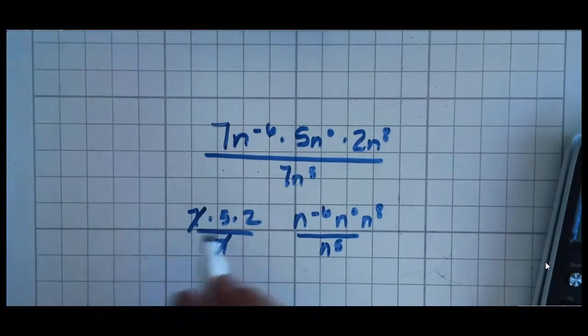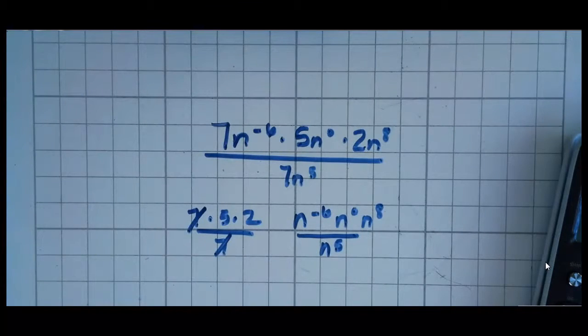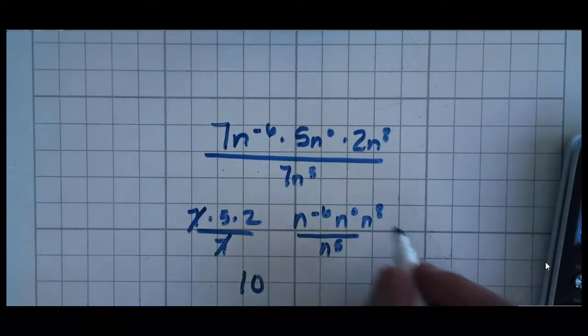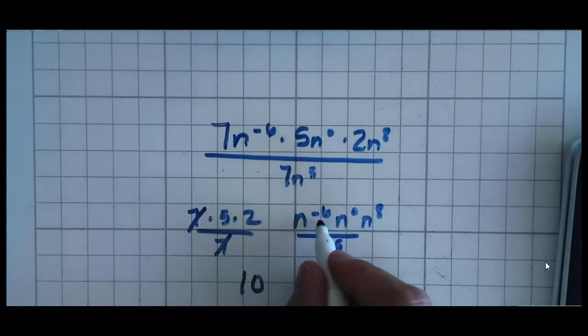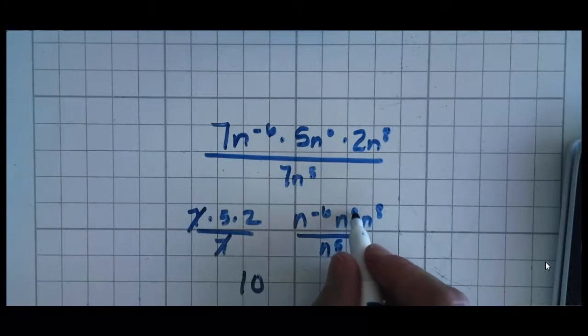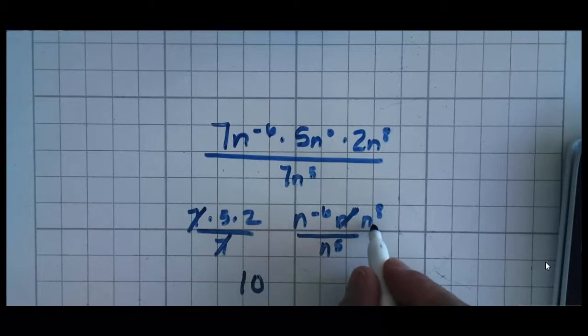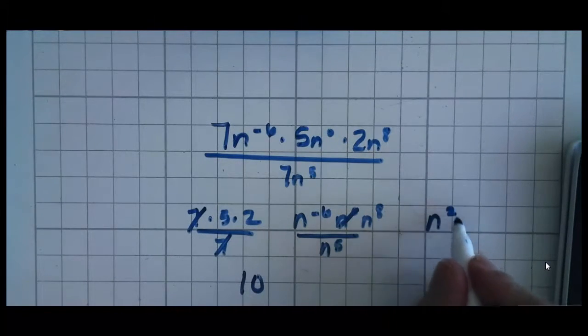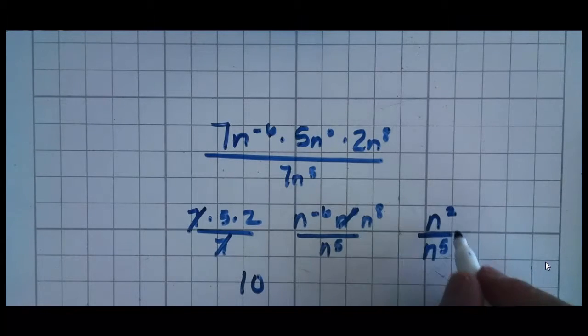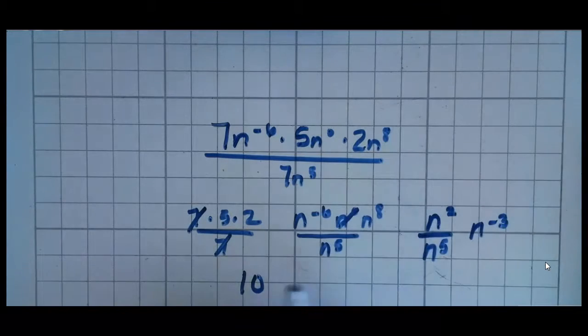So the first thing I see is 7 and 7. I have 7 over 7, which is 1. 5 times 2 is 10. So my numbers are going to end up being 10. But now let's look at this. I have negative 6 plus 0. And by the way, n to the 0 is just 1. We can get rid of that altogether. So n to the 6th, negative 6th, n to the 8th. I can add the 8 and the negative 6th together and get n squared over n to the 5th. Now I'm going to do my trick where I take top exponent minus bottom exponent. 2 minus 5 is n to the negative 3.